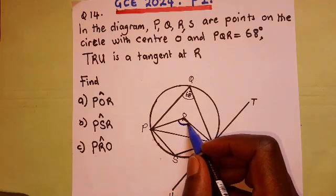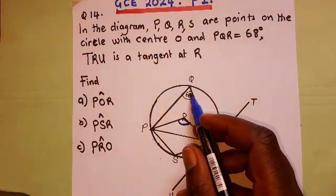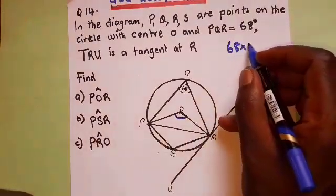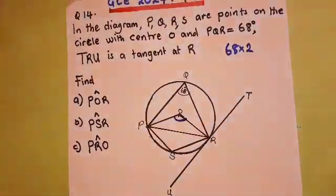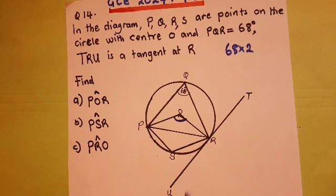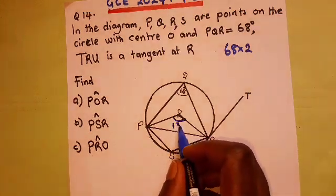You know that this one here, we need to multiply this one by 2. So it will be 68 by 2, the angle at the center, twice the angle of the circumference. So you multiply 68 by 2. What do you get? 68 by 2. What are you going to be getting? Let's do that. We need to get 136.